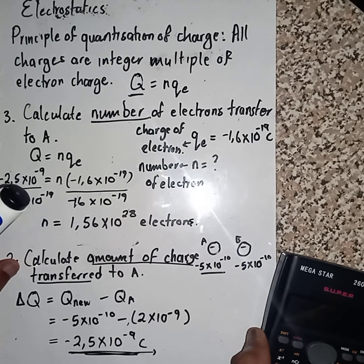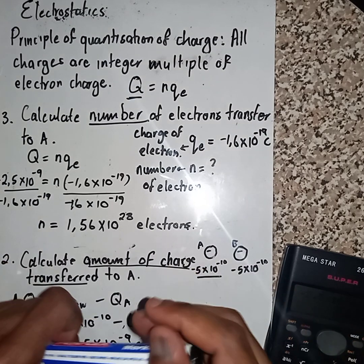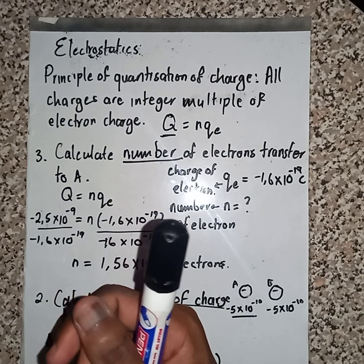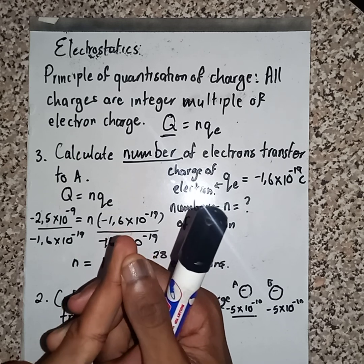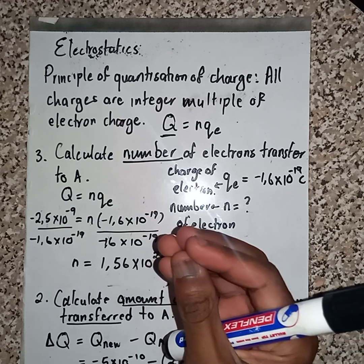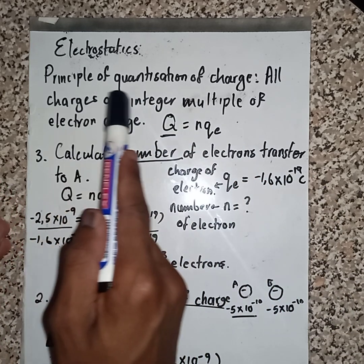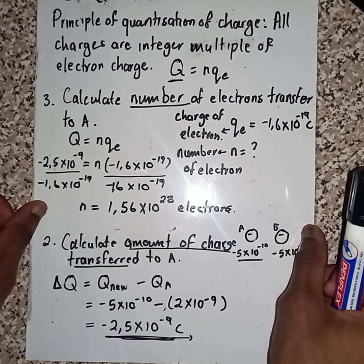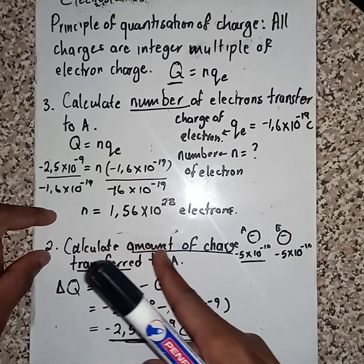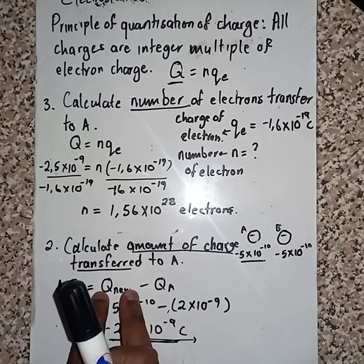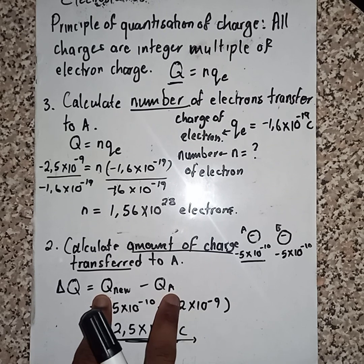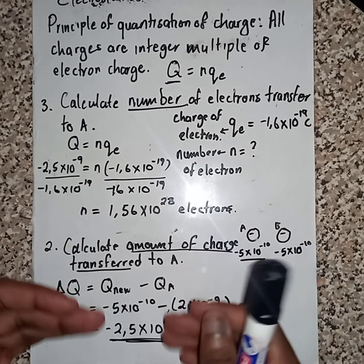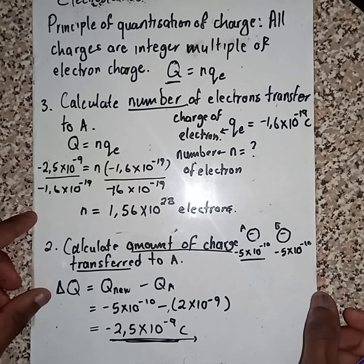That's how we answer these three questions. For this lesson, as a learner you must know how to state the law of conservation of charge and how to calculate using the formula Q1 plus Q2 divided by 2. You also need to know the principle of quantization of charge and how to use that formula. Bear in mind, to calculate the amount of charge, we always take the newly charged value and subtract it with the before value. Work it out until you get your final answer. Thank you.